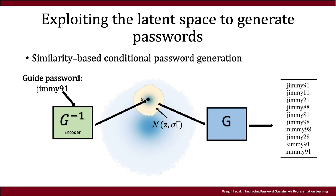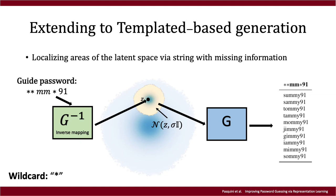Additionally, we show that in this approach the chosen guide password can be expressed under the form of a template rather than a string. That is, we can specify the guide password with missing characters using special wildcard symbols. When sampling from the latent space, the model will automatically find the best fit for these missing characters, producing suitable guesses. This allows us to express more general guidance during the generation process and deal with incomplete information useful in certain applications.